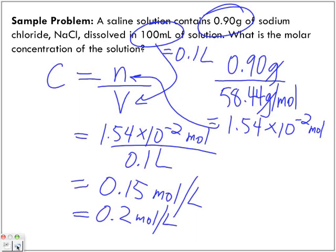But the least number of significant digits in my question is 1, so my answer is 0.2 moles per liter. So 0.2 moles per liter is the molar concentration of the saline solution.